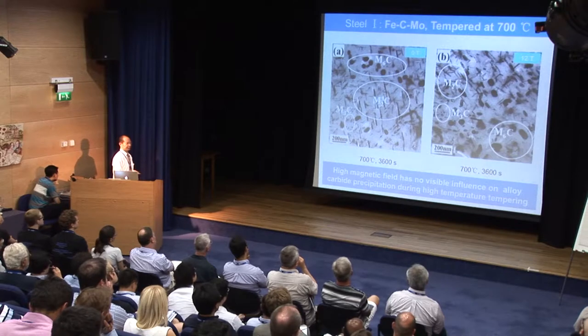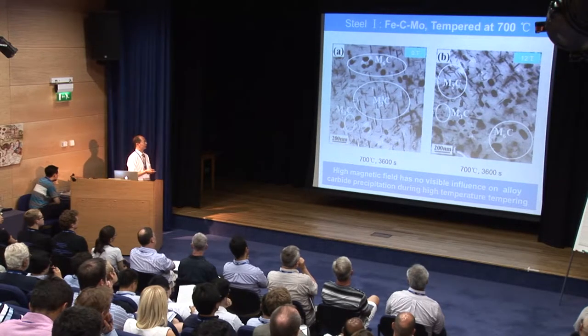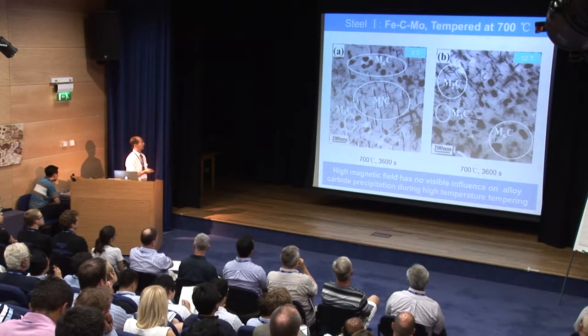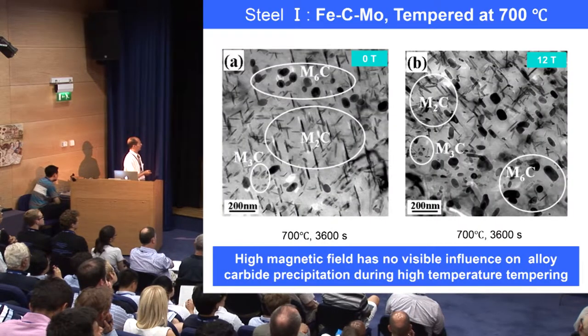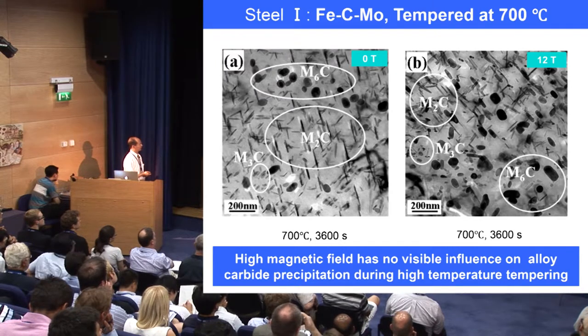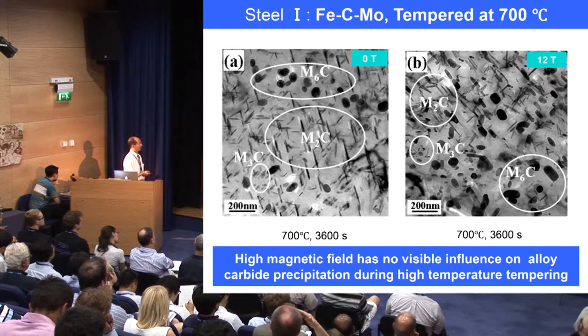If we shift the temperature to 700 degrees C, we can see that M2C, M3C, and M6C are all precipitated in the specimens both with and without the presence of high magnetic field. So it is clear that the magnetic field has no obvious influence on austenoid carbide precipitation during higher-temperature tempering.